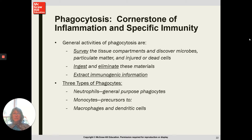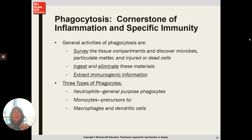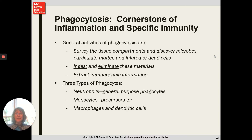Phagocytes survey tissues looking for pathogens, injured or dead cells, then ingest and eliminate those materials. Critically, they also extract immunogenic information — while surveilling, they identify exactly what is causing the problem and present that to our adaptive immune system, essentially saying 'this is our target, this is what we want to eliminate.' So our nonspecific phagocytes constantly in circulation are the ones who inform the adaptive immune system of what specifically we are looking for.